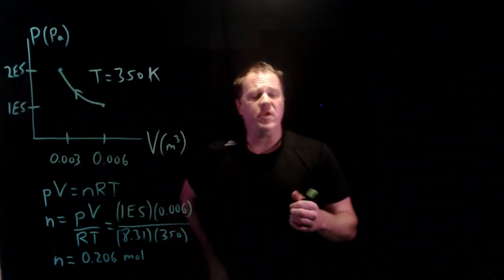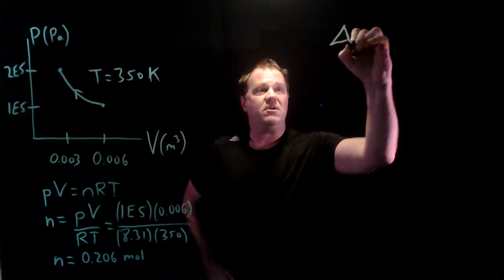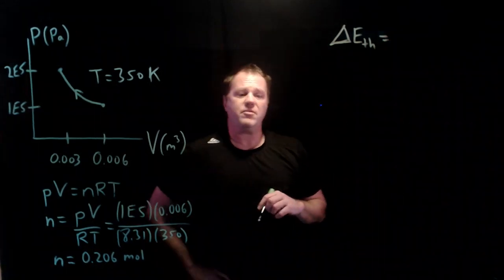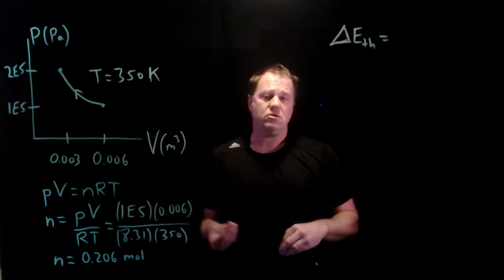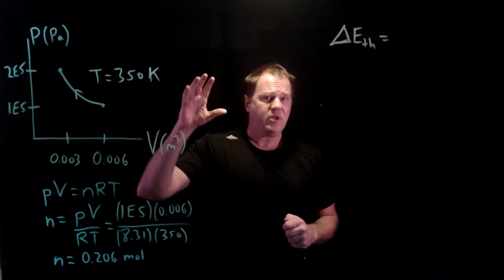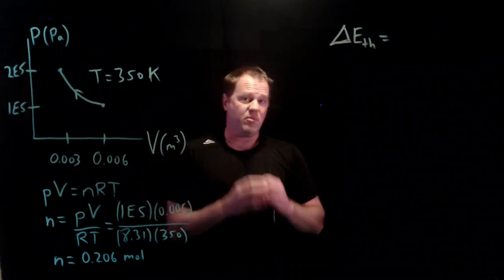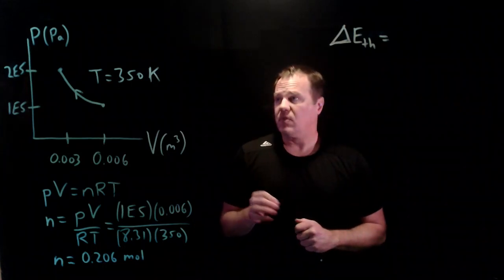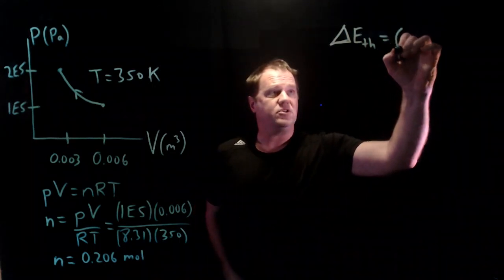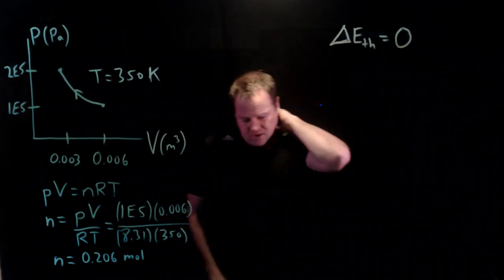We can do this in any order we want. So let's start with the easy one. Change in thermal energy is actually very easy for an isothermal process. Think about what's happening at the molecular level. Temperature relates to the motion of the molecules. If we're not changing the temperature, we're not really changing the motions of the molecules. They're bumping more often into the walls of the container because we shrunk the container, but the molecules aren't moving faster. The temperature hasn't increased. So the thermal energy remains the same. So change in thermal energy equals zero. You could show this explicitly with a calculation, but why bother? We can just assert that it's zero because the temperature didn't change.